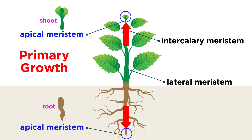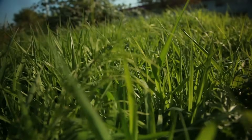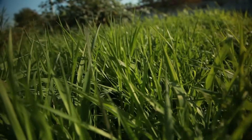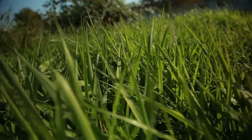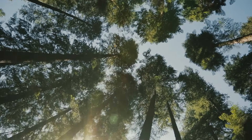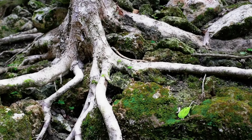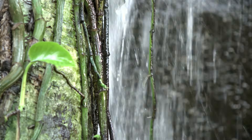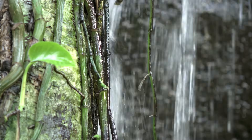When a plant is exhibiting primary growth, it is building more cells to make it taller or longer. So primary growth makes the grass in your lawn grow higher, it makes trees grow taller, it makes roots grow deeper, and it makes vines grow longer.